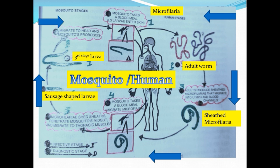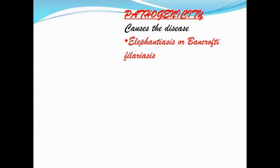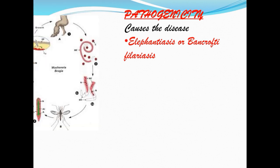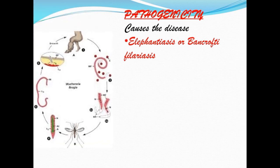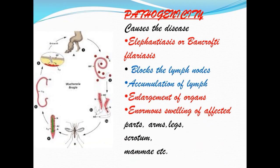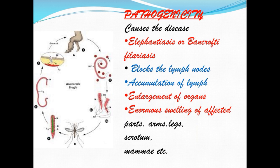Pathogenicity: it causes the disease elephantiasis or bancroftian filariasis. It blocks the lymph glands, causing accumulation of lymph, enlargement of organs, and enormous swelling of the affected parts, mainly arms, legs, scrotum, mammae, etc. The disease spreads by the bite of the mosquito, and when a person is infected with this parasite, swelling of the affected part occurs.